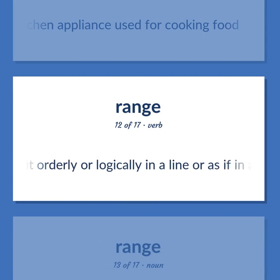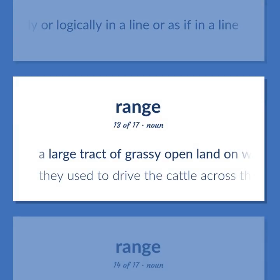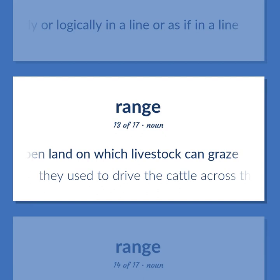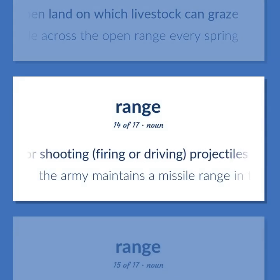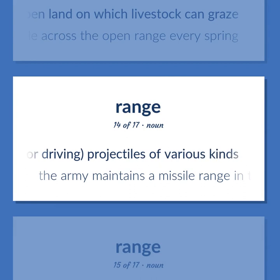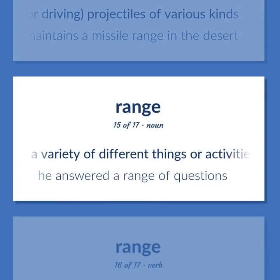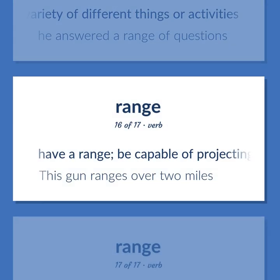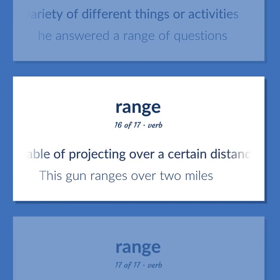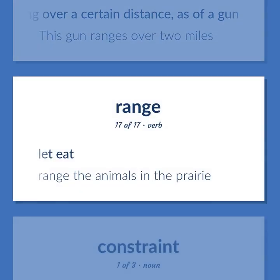Layout orderly or logically in a line or as if in a line. A large tract of grassy open land on which livestock can graze. They used to drive the cattle across the open range every spring. A place for shooting, firing or driving, projectiles of various kinds. The army maintains a missile range in the desert. A variety of different things or activities. He answered a range of questions. Have a range; be capable of projecting over a certain distance, as of a gun. This gun ranges over two miles. Let eat. Range the animals in the prairie.